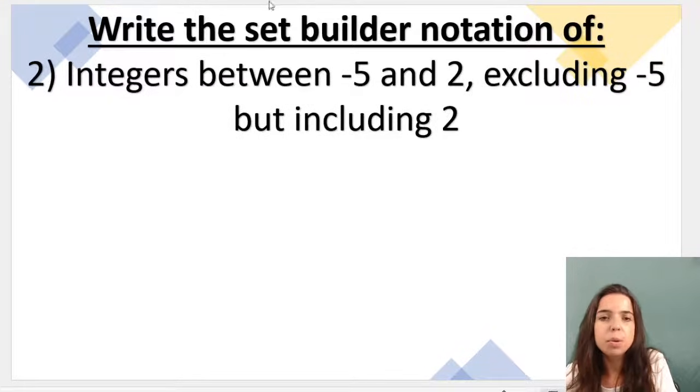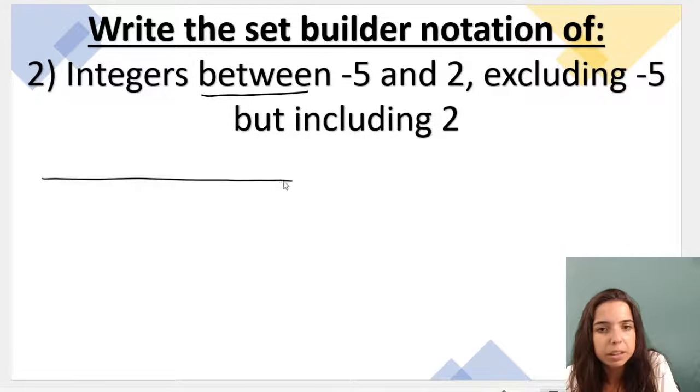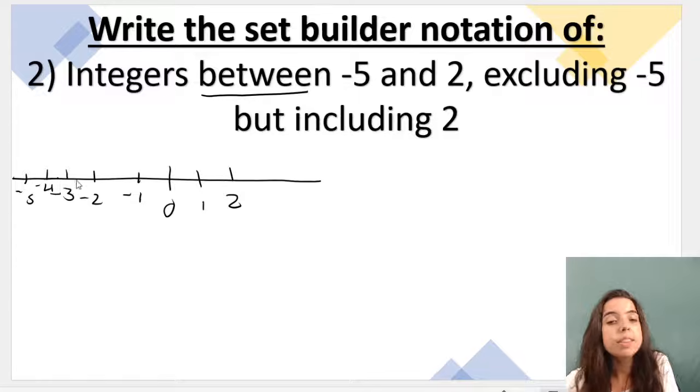Our next example, integers between negative 5 and 2. So if you think of the number line like this, remember 0 is over here, then we've got 1, then we've got 2. Over here we've got negative 1, negative 2, negative 3, negative 4 and negative 5.